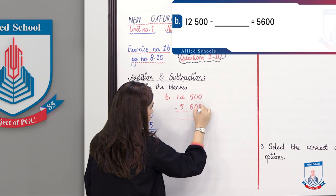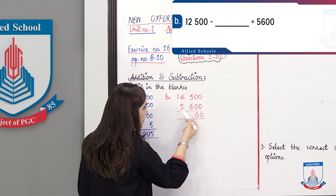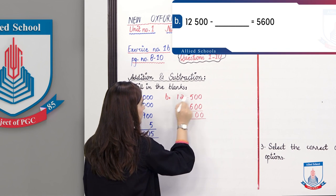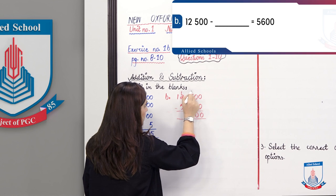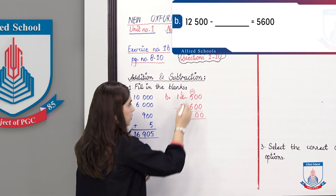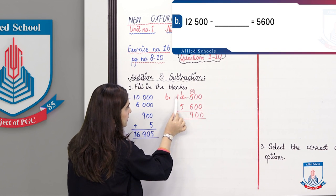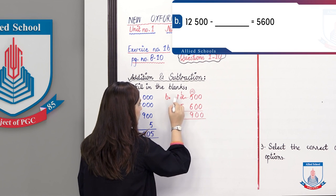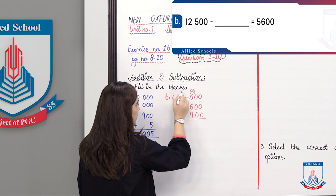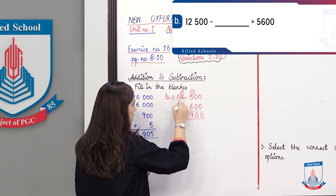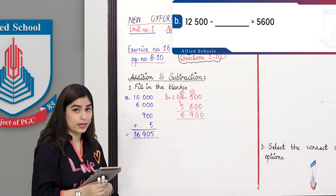Starting from the ones place: 0 minus 0 is 0, 0 minus 0 is 0. Here we have a smaller number 5 and a bigger number 6, so we cannot subtract smaller from bigger. We carry from the next digit. The 2 becomes 1, and we add 10 to the 5 making 15. 15 minus 6 is 9. Then after carrying, 11 minus 5 is 6. The answer is 6,900.